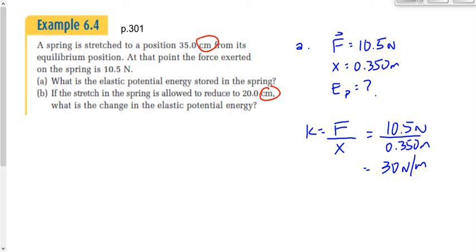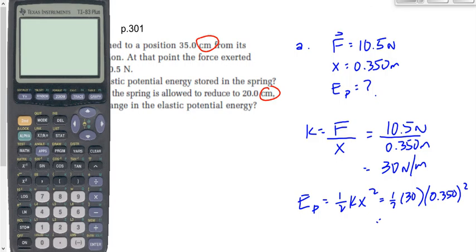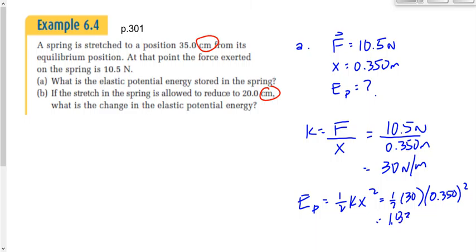Even if I didn't need k for this question — which I do — finding it isn't wrong. That is the spring constant of this spring. Now I'll plug it into the potential energy equation: Ep equals one-half kx squared becomes one-half times 30 times 0.350 squared.